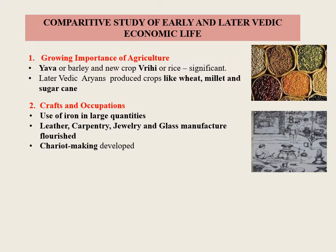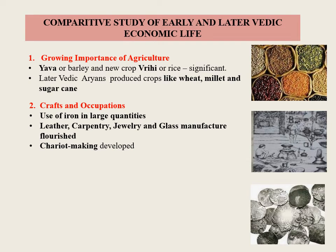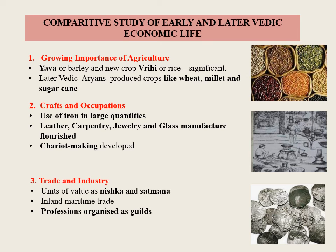Trade and Industry: Important changes can be seen in the field of trade and commerce. Commerce was made easier by use of units of value such as nishka and satmana, although it cannot be said with certainty that they had developed into regular coins. References to ships indicated a flourishing inland and maritime trade. Many professions were organized into guilds which controlled prices and ensured the quality of goods.